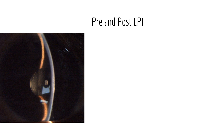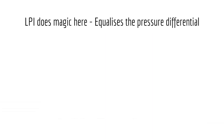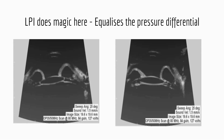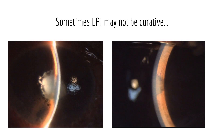Absolute pupillary block may result from formation of posterior synechiae. This patient had developed iris bombé post-cataract surgery due to persistent inflammation. Laser iridotomy was done and the anterior chamber deepened immediately. However, laser PI may not be helpful in eyes with 360 degrees posterior synechiae with a flat AC, as in chronic uveitis.